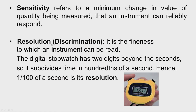Another term is resolution, sometimes also known as discrimination. It is the fineness to which an instrument can be read. For example, a digital stopwatch with two digits beyond the seconds subdivides time into hundredths of a second. Hence, one-hundredth of a second is the resolution of this digital watch.